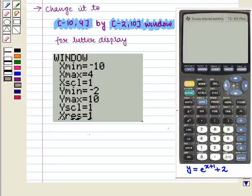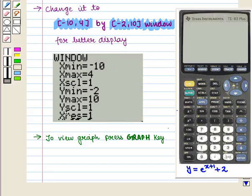Then we change it to closed interval from minus 10 to 10 window for better display. On changing window settings, we get following display on the screen. Now to view its graph, we press graph key.